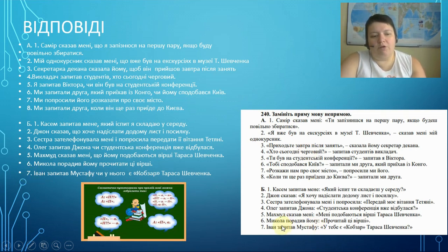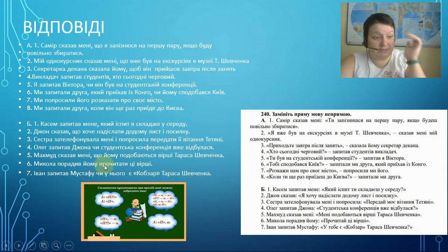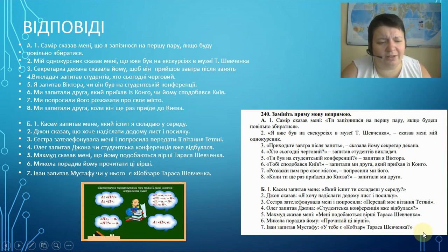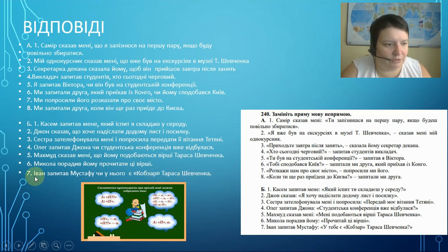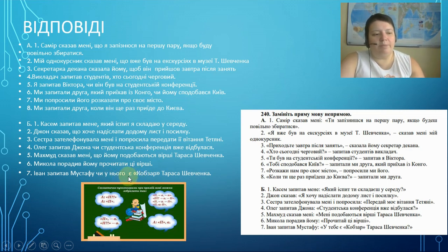Example six — direct speech: Микола порадив йому: 'Прочитайте ці вірші.' Indirect: Микола порадив йому прочитати ці вірші. Mikola advised him to read these poems. Again, we use the infinitive. We could also use ЩОБИ — щоб він прочитав ці вірші — but that's more complicated; the infinitive is easier. Example seven — direct speech: Іван запитав Мустафу: 'У тебе є Кобзар Тараса Шевченка?' Indirect: Іван запитав Мустафу, чи у нього є Кобзар Тараса Шевченка. Іван asked Mustafa if he had the Kobzar by Taras Shevchenko — a selection of poems by this Ukrainian poet. Only ЧИ and the pronoun changes: у тебе → у нього. The verb є stays the same.